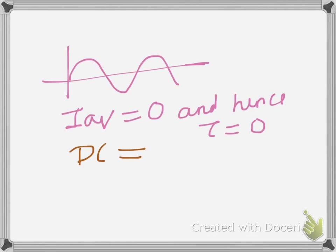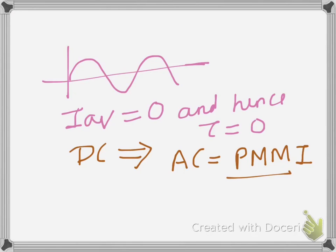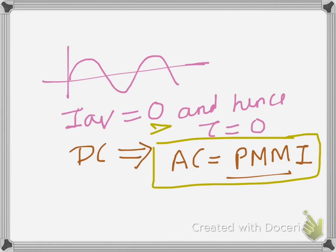For AC, we will go for another type of instrument which is PMMI — Permanent Magnet Moving Iron — and this I am going to discuss in my next lecture. Thanks for watching, like it and subscribe, and I'll come again with another interesting lecture on PMMI. Until then, goodbye, take care.